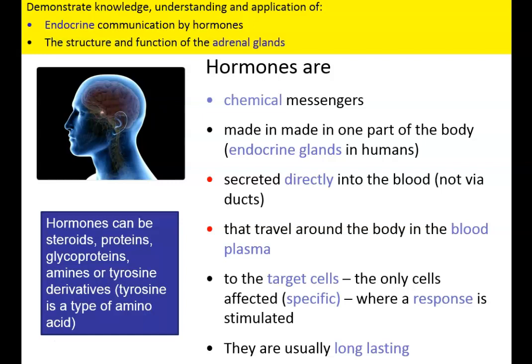Usually chemicals that are secreted in the body pass down little tubes called ducts, but hormones are always secreted directly into the bloodstream and they travel around the body in blood plasma. Hormones can be made of a variety of different chemicals, including steroids, proteins, glycoproteins, amines, or tyrosine derivatives. Tyrosine is a type of amino acid and a derivative means that its starting point was tyrosine — it's made initially from tyrosine.